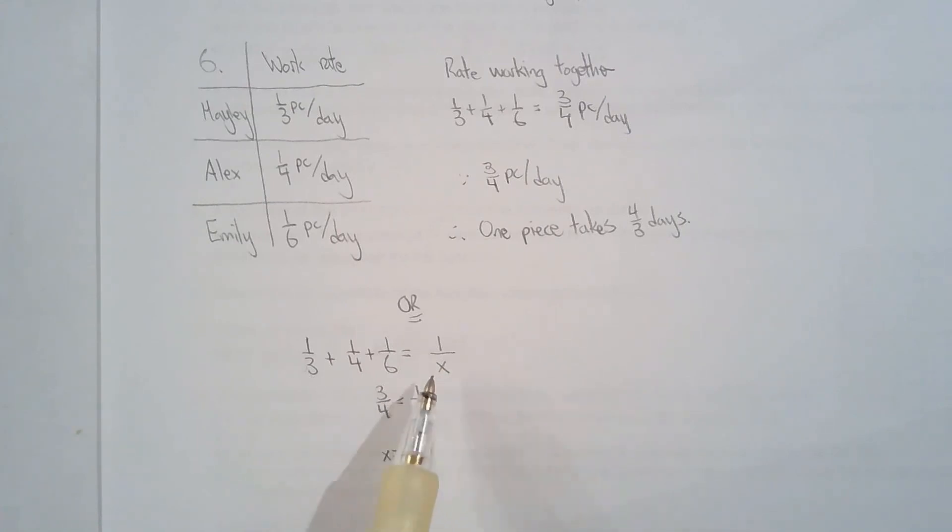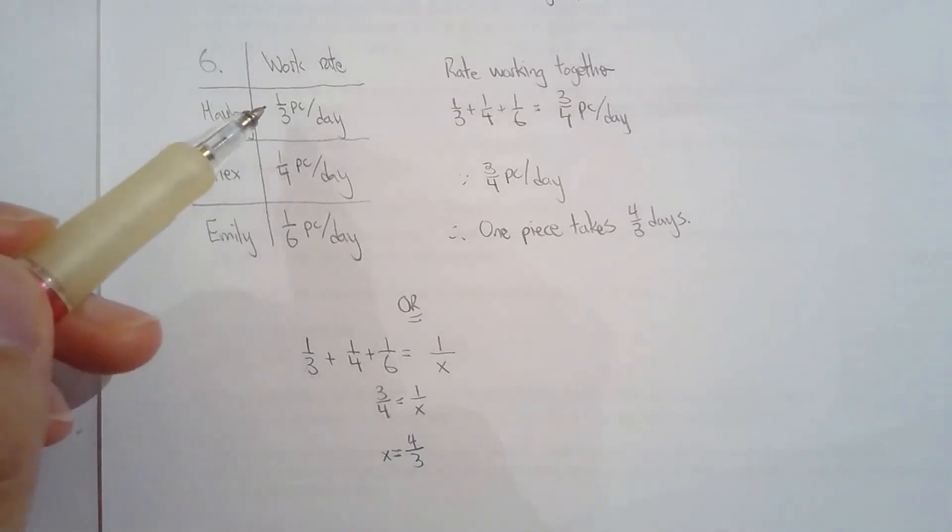If it's one-third, that means it takes three days to complete one piece. If it's one-quarter, that means it takes four days to complete a piece. So what is x when they're all working together? This is the time it takes to complete one piece. That's it. There are more complicated work rate problems, but the idea is very similar. You really want to generate the work rate of each individual and then combine their work rates and see how long it takes for them to complete the job. That's the solutions for making connections with rational functions.